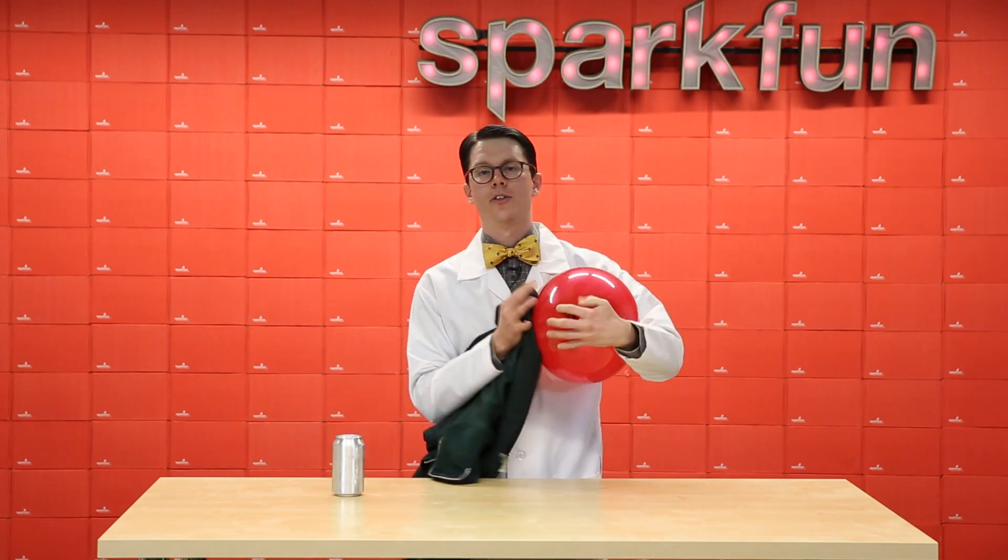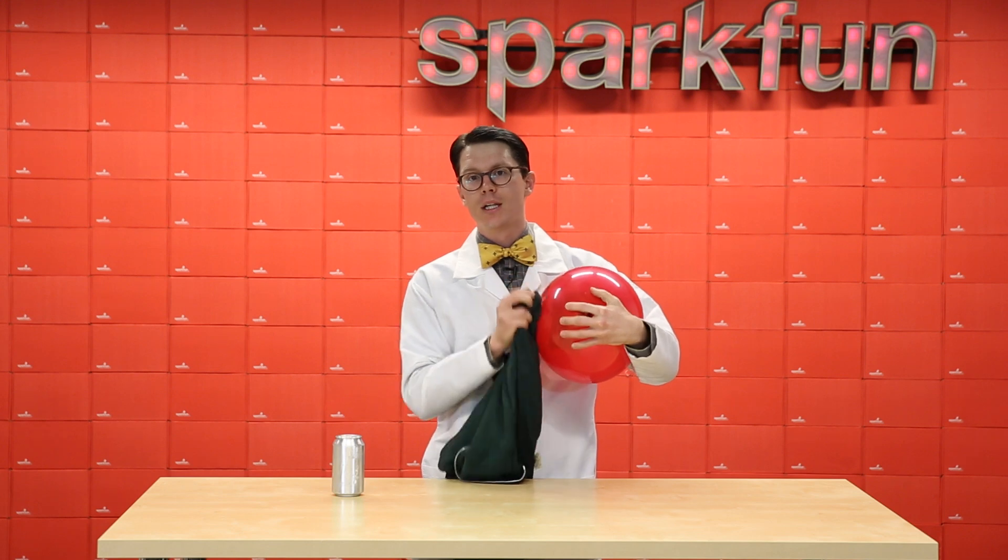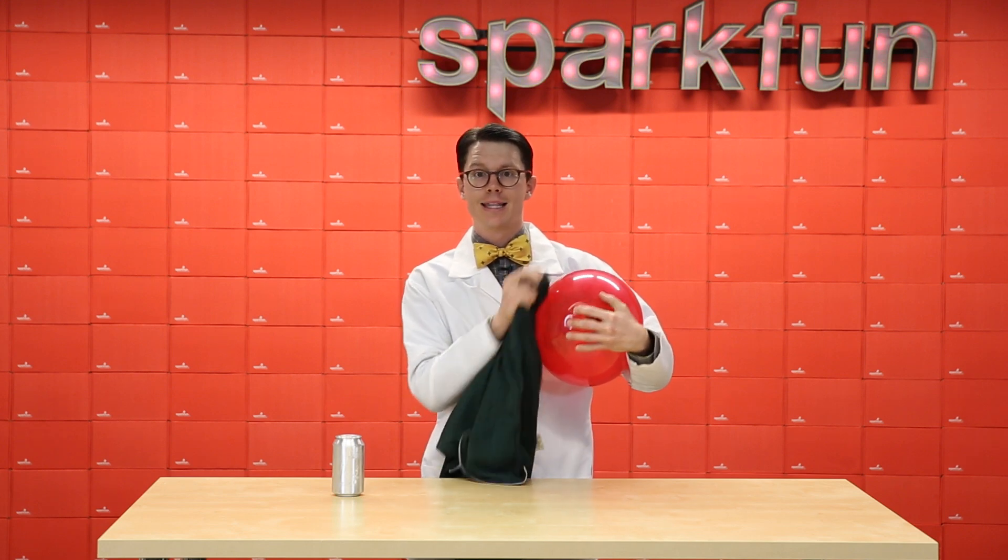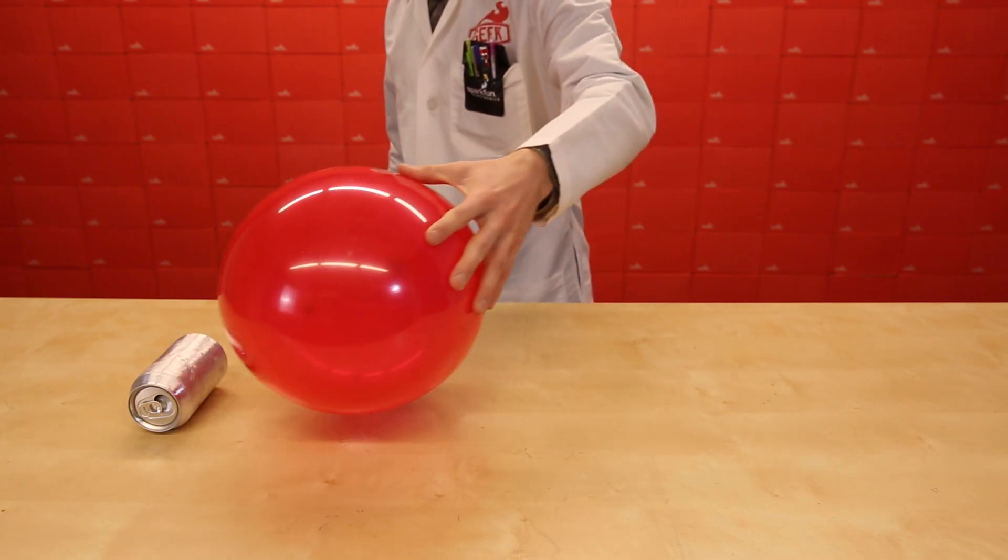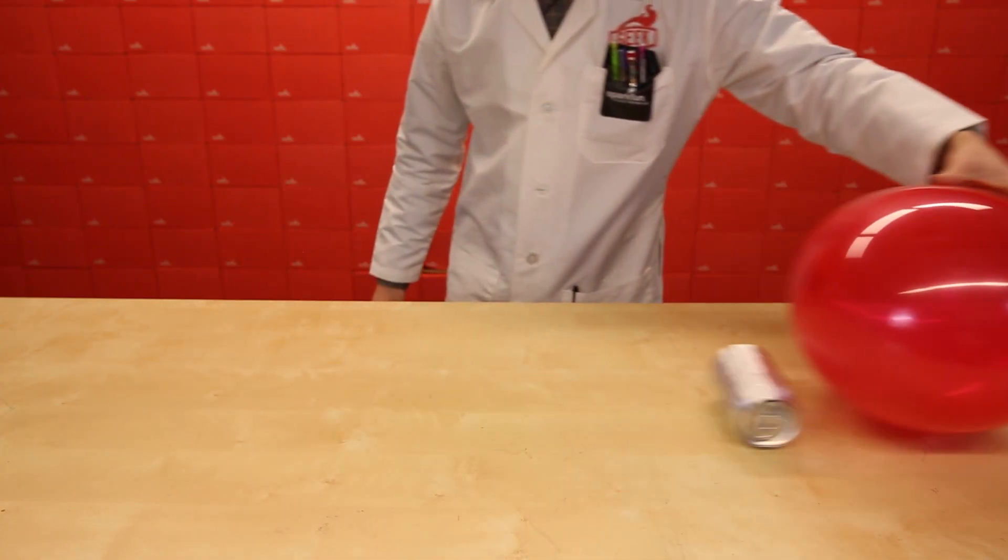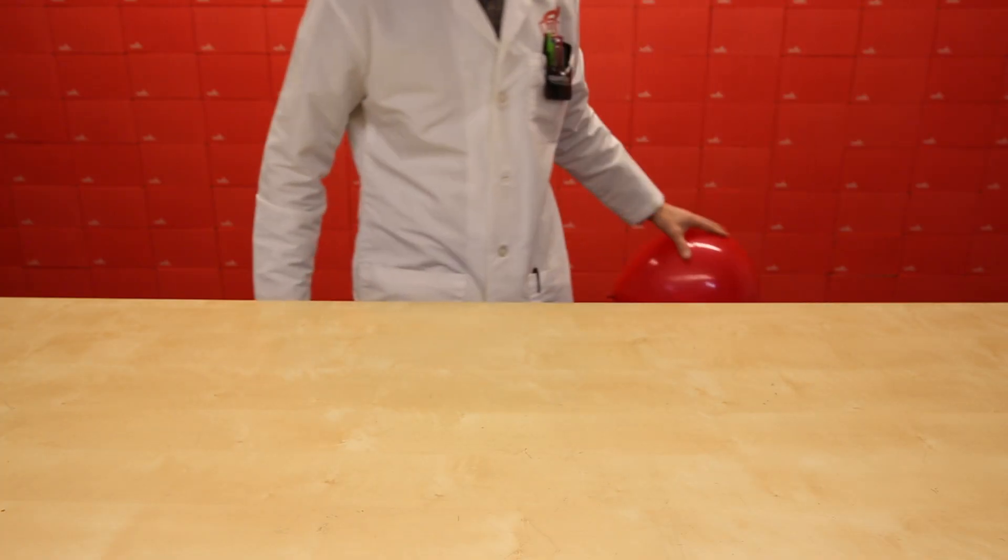When I rub a piece of cloth against the balloon, I strip away electrons from the piece of cloth and add them to the balloon. As a result, this balloon now has a net negative charge. When we bring it close to the can, the can chases the balloon.